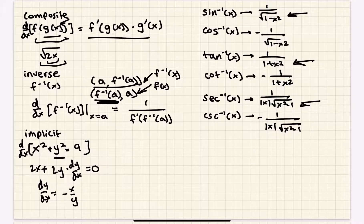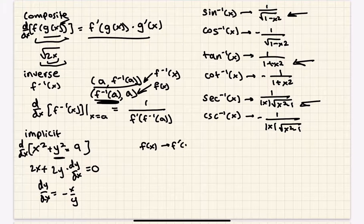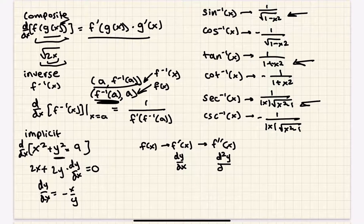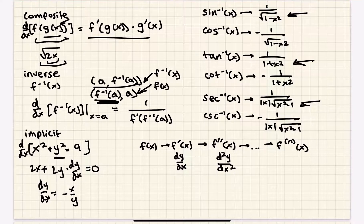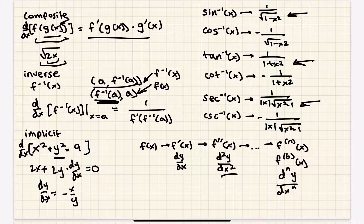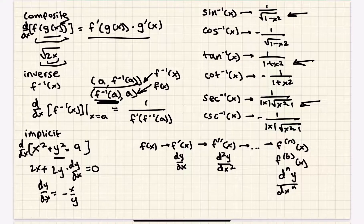The final topic of this video doesn't directly connect to everything else we learned, but it's a good thing to know for derivatives and there's nowhere else to place it — higher order derivatives. We know about the first derivative f prime of x, which is dy/dx. The second derivative, f double prime of x, is d squared y over dx squared. You can continue this on to the nth derivative, written as f superscript n of x, or d to the n of y over dx to the n. To find them, you just take the derivative of the first derivative to get the second, the derivative of the second to get the third, and so on.